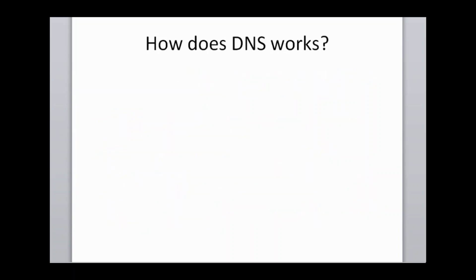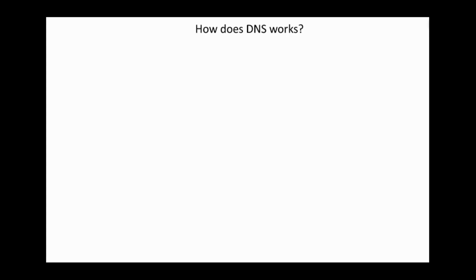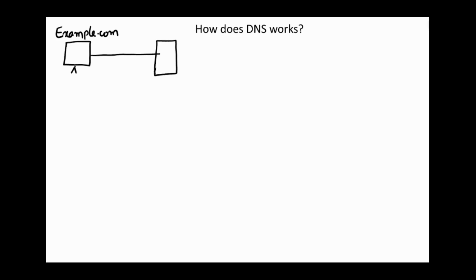Now let's discuss how DNS works. Let's create a small diagram. Here we have the user who is trying to access a URL — for example, example.com. This client machine will send a query to a DNS server, which is our recursive DNS server. If the recursive DNS server has the information about the URL in its cache, it will reply back to the client directly.